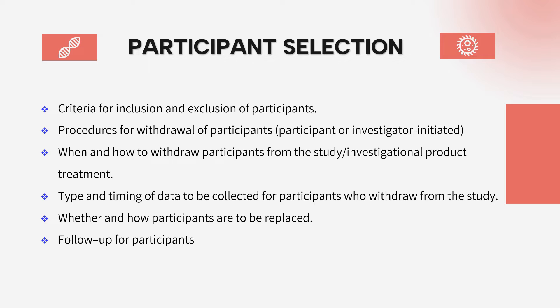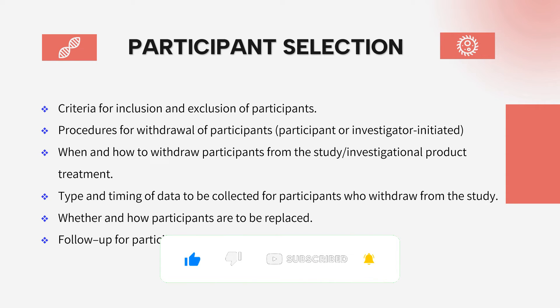The participant selection section also covers compensation, frequency of visits, and whether and how participants are to be replaced if they drop out from the intended targets, and how follow-up will be conducted. Overall, it clearly defines which age group, which disease criteria, what the inclusion and exclusion criteria are, whether screening and re-screening is allowed, how participants will be followed, and what particular sampling would be done.